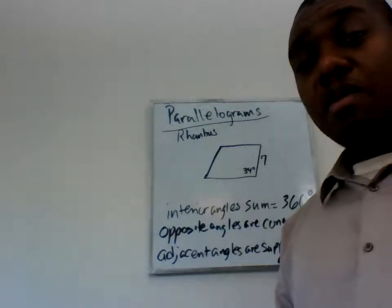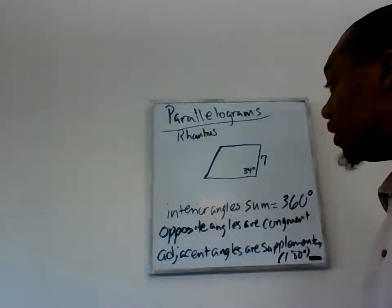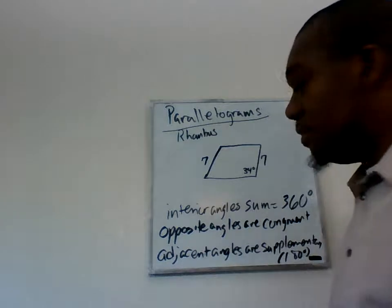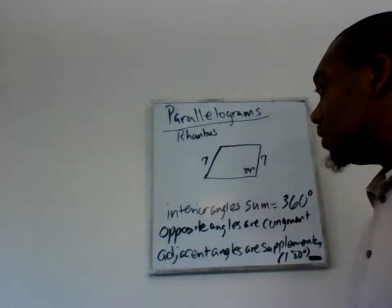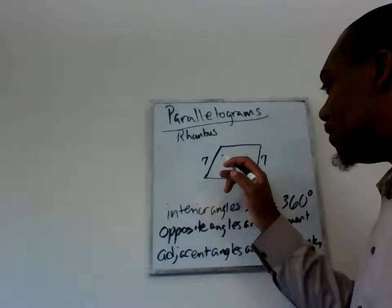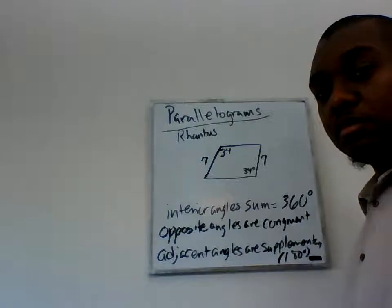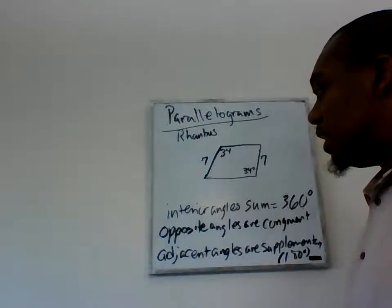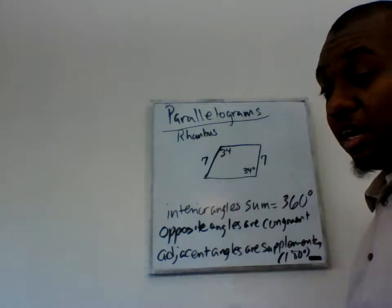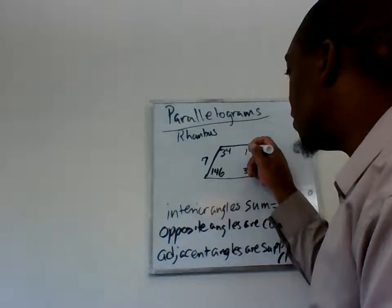Why is that? Well, a rhombus is a parallelogram, so based off of that fact we know four things. We know that if this side is 7, the opposite side must also be 7. We know that opposite angles are congruent, so if this angle is 34 degrees, the opposite angle is also 34 degrees. And because adjacent angles are supplementary — meaning they add to 180 degrees — the other two angles must each be 146 degrees.